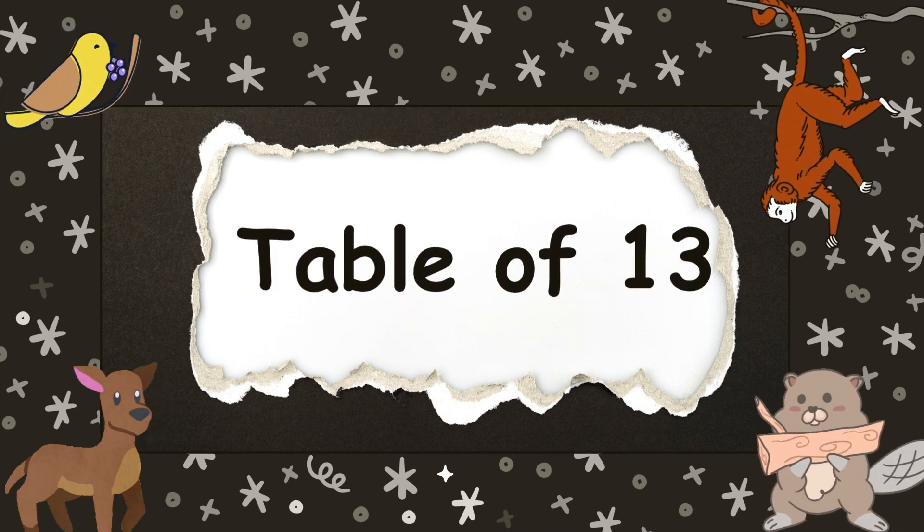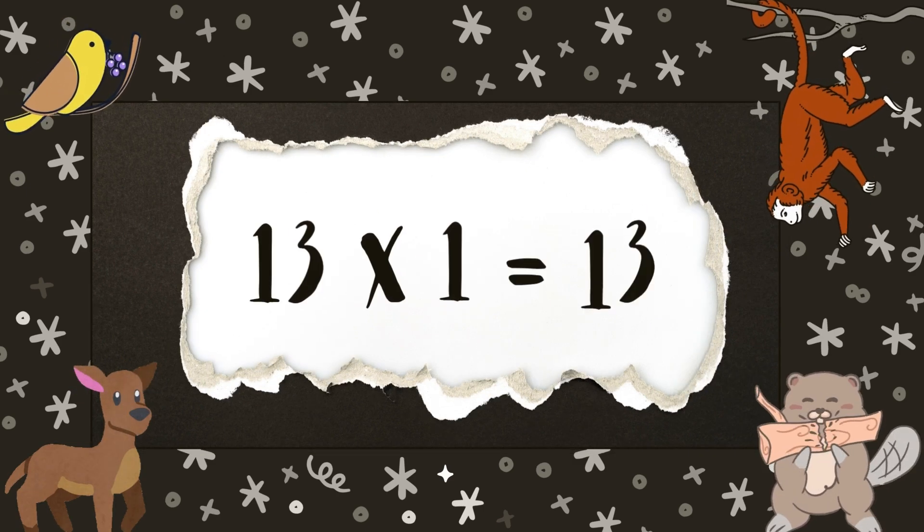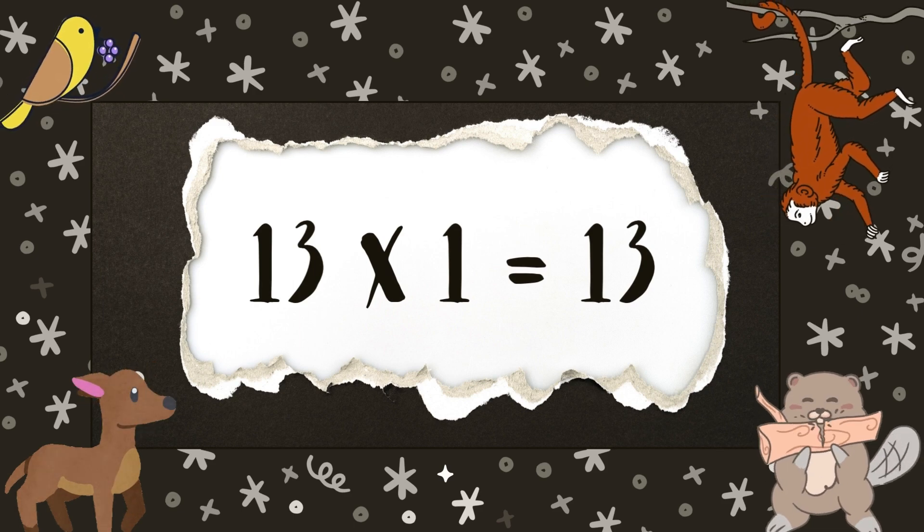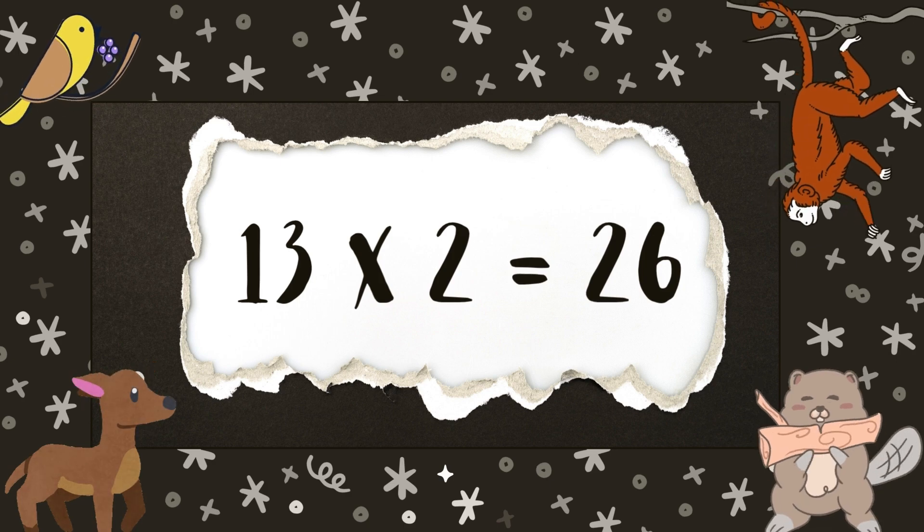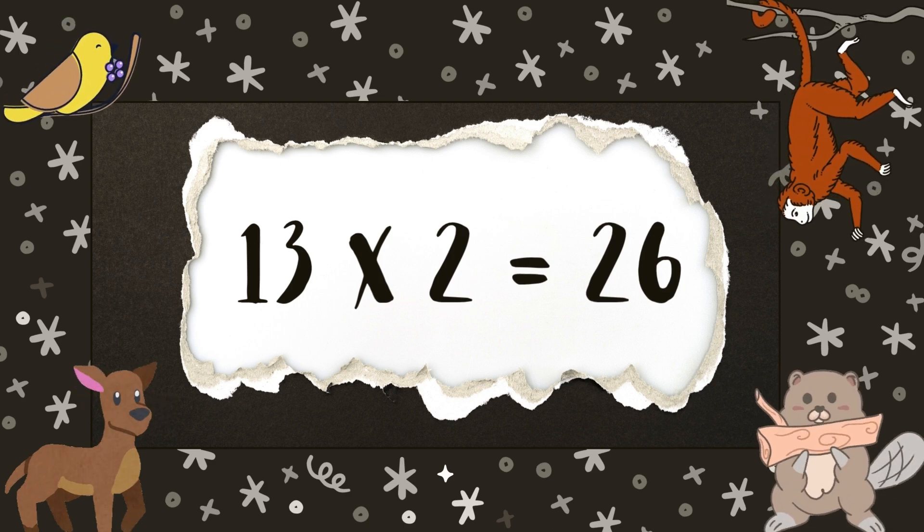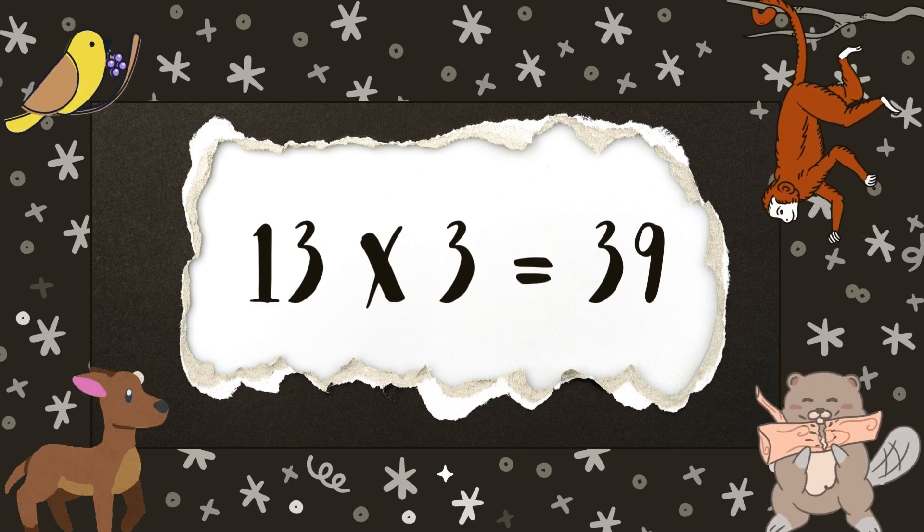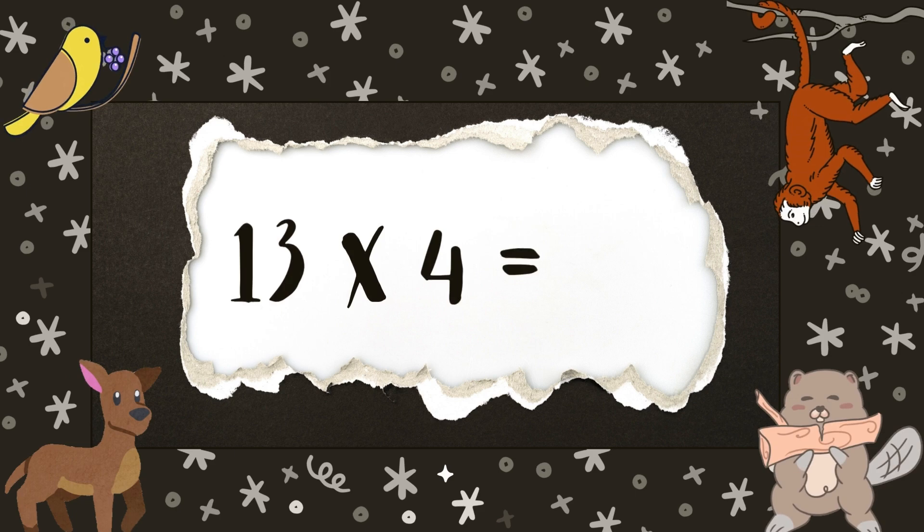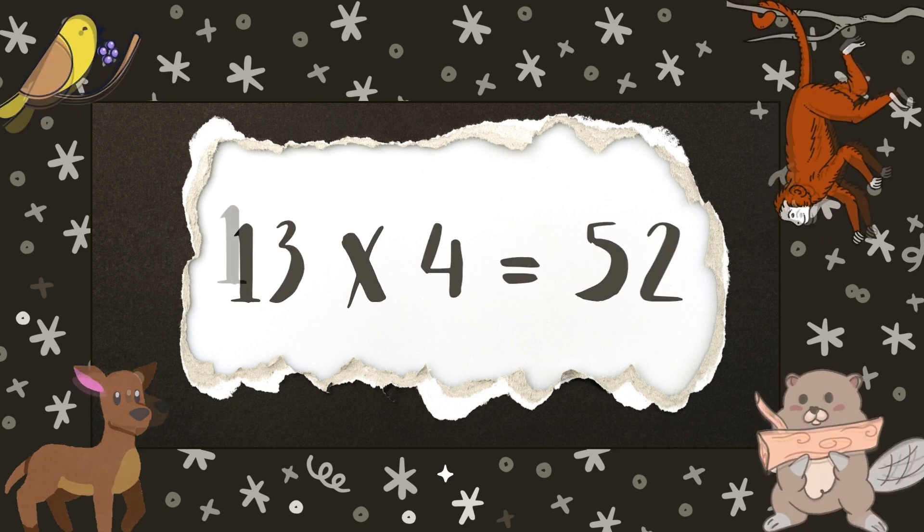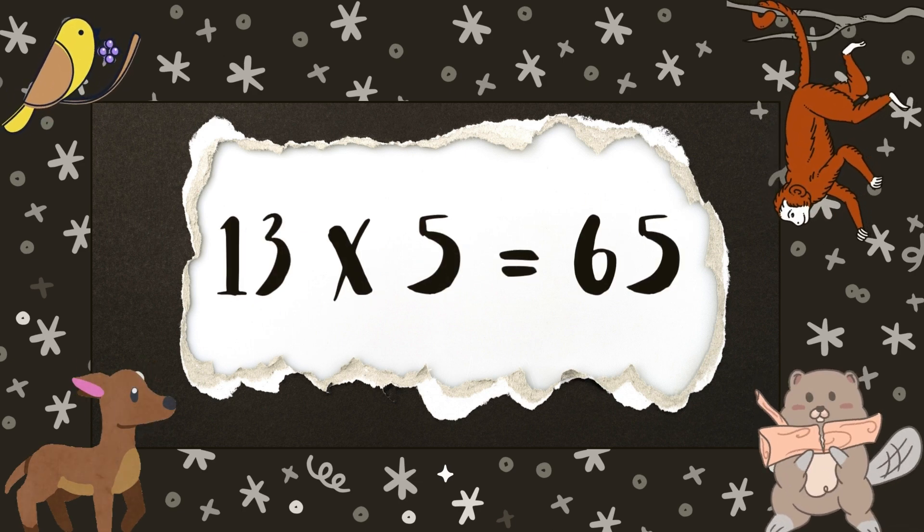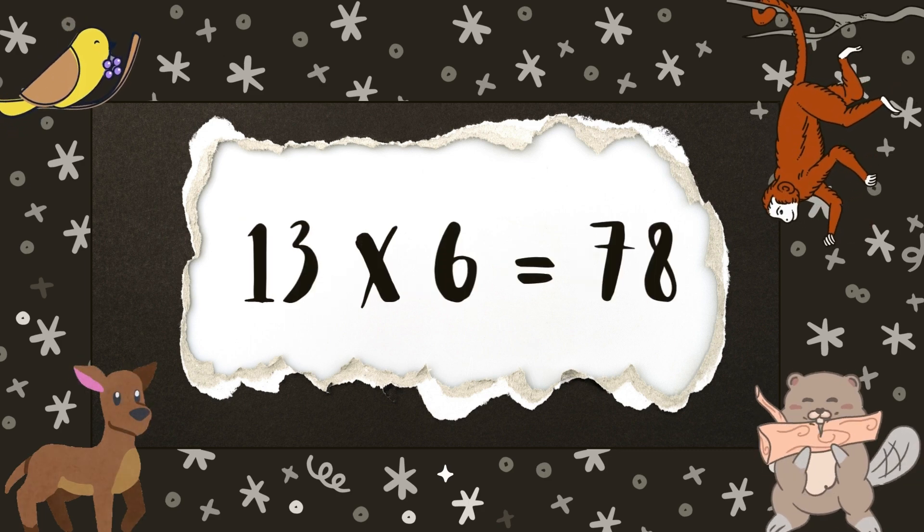Let's learn table of 13. 13 1s are 13, 13 2s are 26, 13 3s are 39, 13 4s are 52, 13 5s are 65, 13 6s are 78.